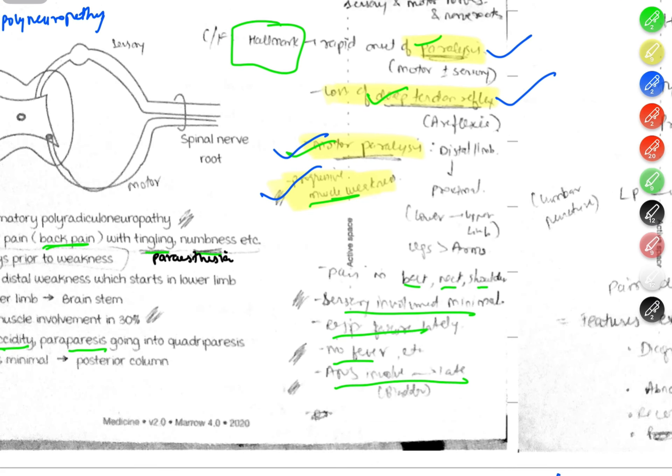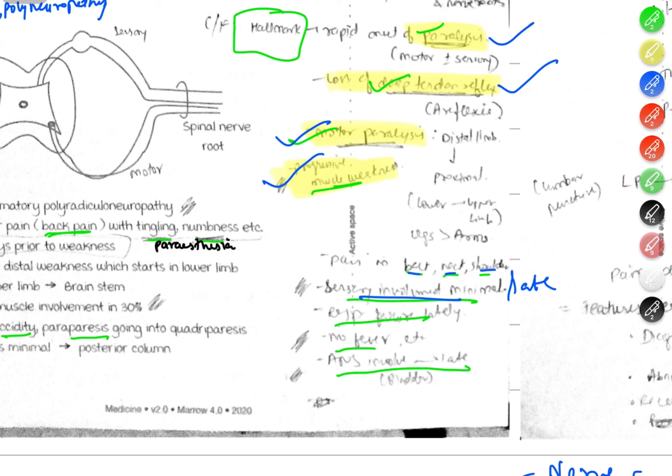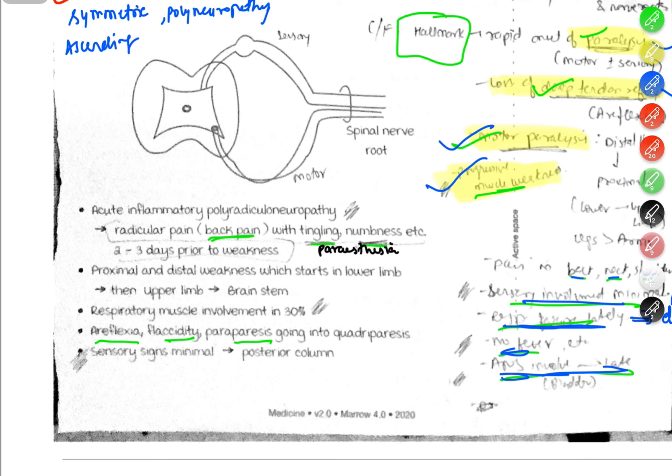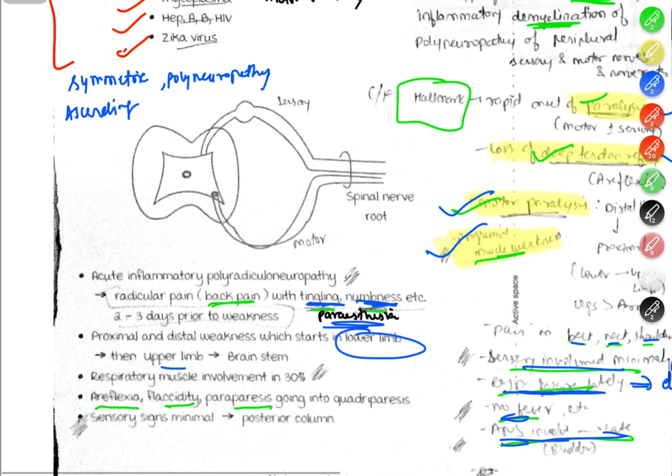Other symptoms include pain in the back, neck, and shoulder. Sensory involvement is minimal or late. Respiratory failure occurs late and can cause death. There may be fever or ANS involvement. Back pain, tingling sensation, numbness, paresthesias. Proximal and distal weakness starting in lower limbs then upper limbs progressing symmetrically.